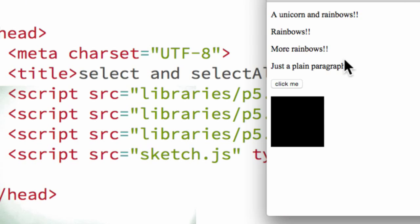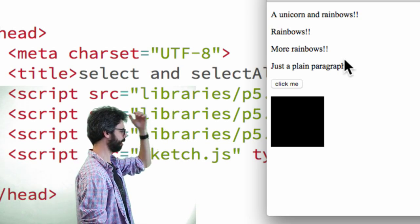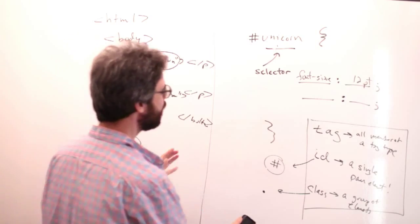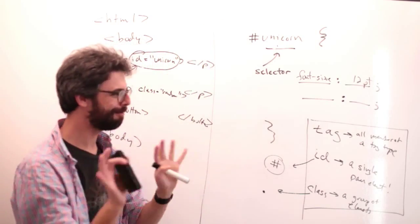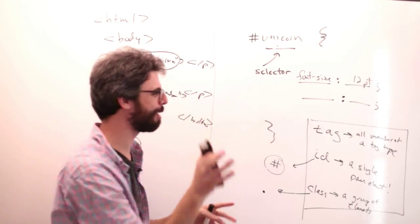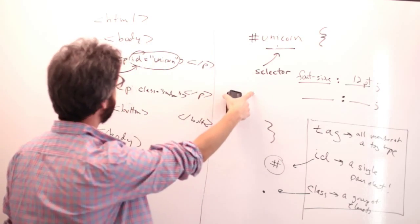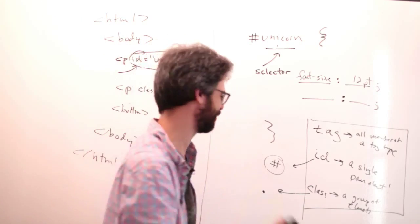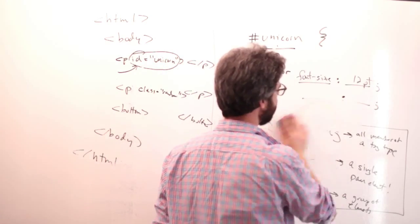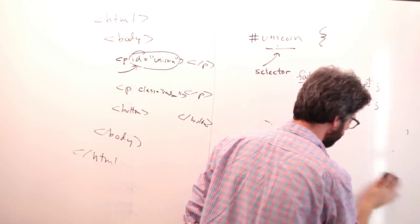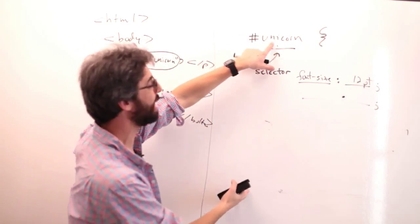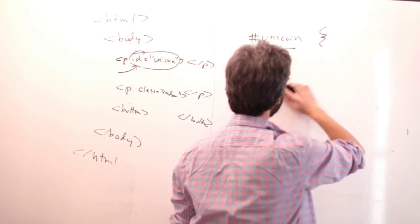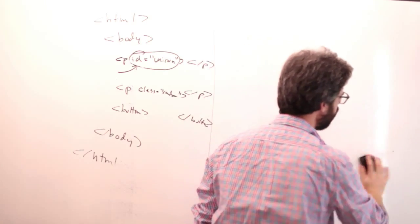Let's take a look at this particular page. Here is some HTML. This is the way of creating a selector - like the ID unicorn gets a particular style. And if you're doing this instead from within JavaScript, the equivalent of that would be: var element equals select.